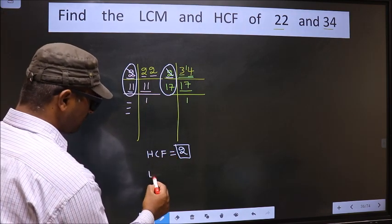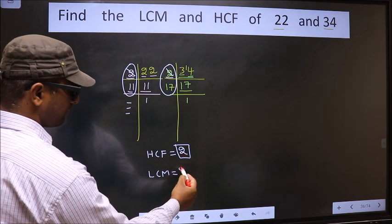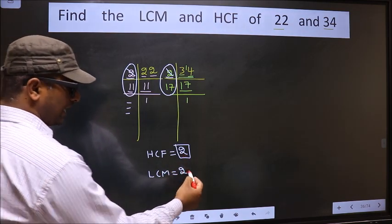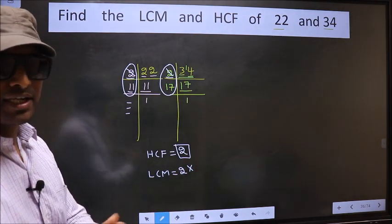Now to get LCM, whatever HCF we got, to that we should multiply by the numbers which we did not cut.